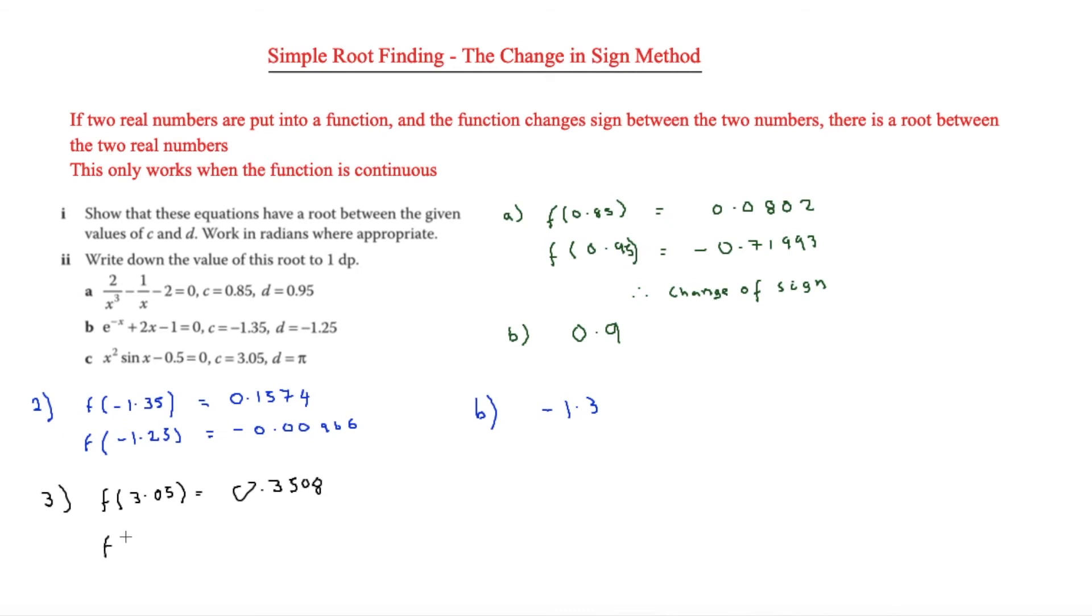Then we put f of pi in. This time we're putting pi in, so we get pi squared sine pi minus 0.5, which equals minus 0.5. Evidently there is also a change of sign, so there's going to be a root between that.